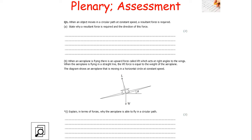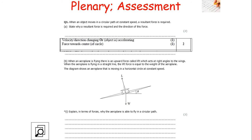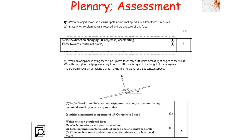When an object moves in a circular path at constant speed, a resultant force is required because, even though speed is constant, the direction is changing, so the velocity is changing. A change in velocity requires a resultant force, which always acts towards the centre of the circle. When an aeroplane flies in a horizontal circle, the lift force acts at an angle, giving a horizontal component towards the centre of the circle which acts as the centripetal force, whilst the vertical component opposes the weight.